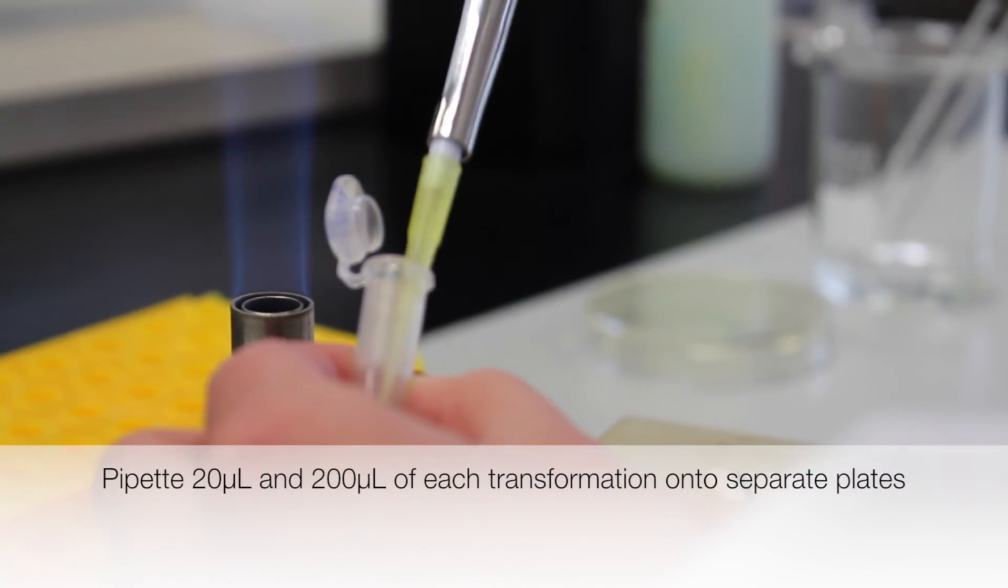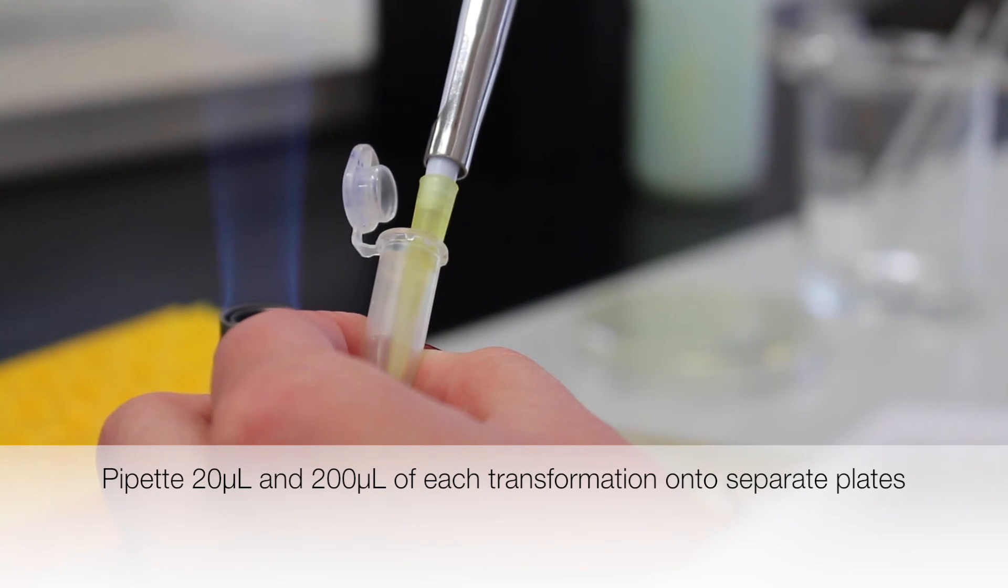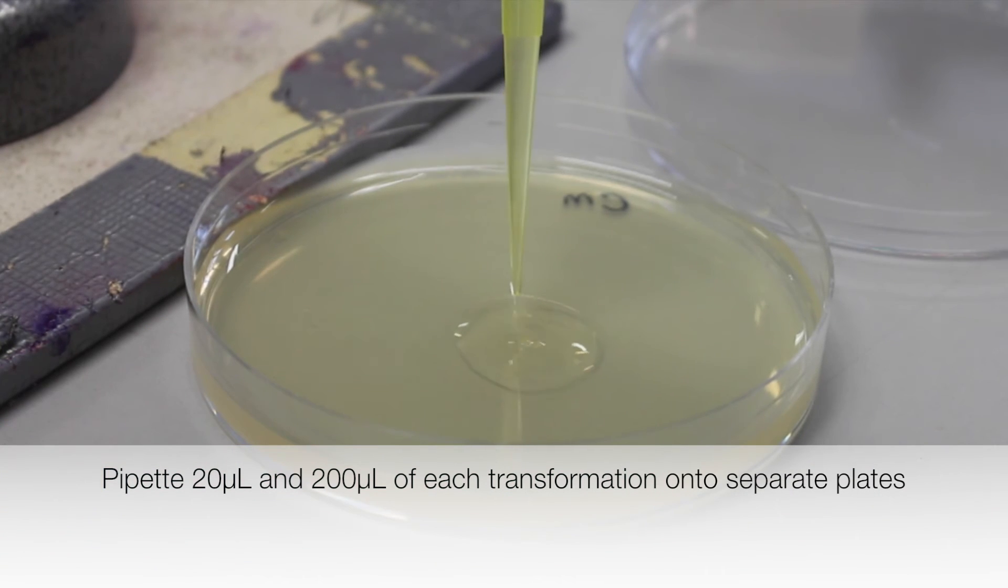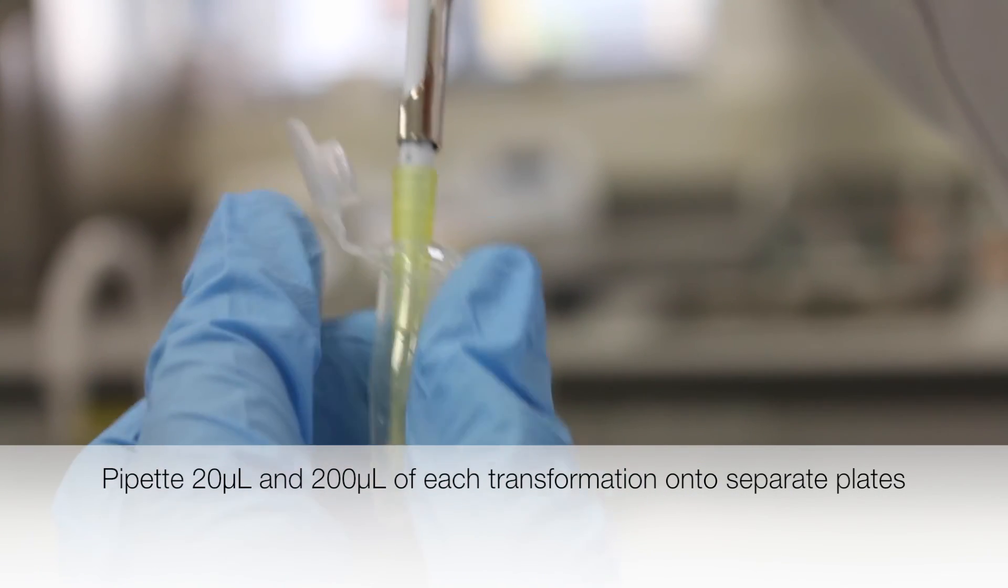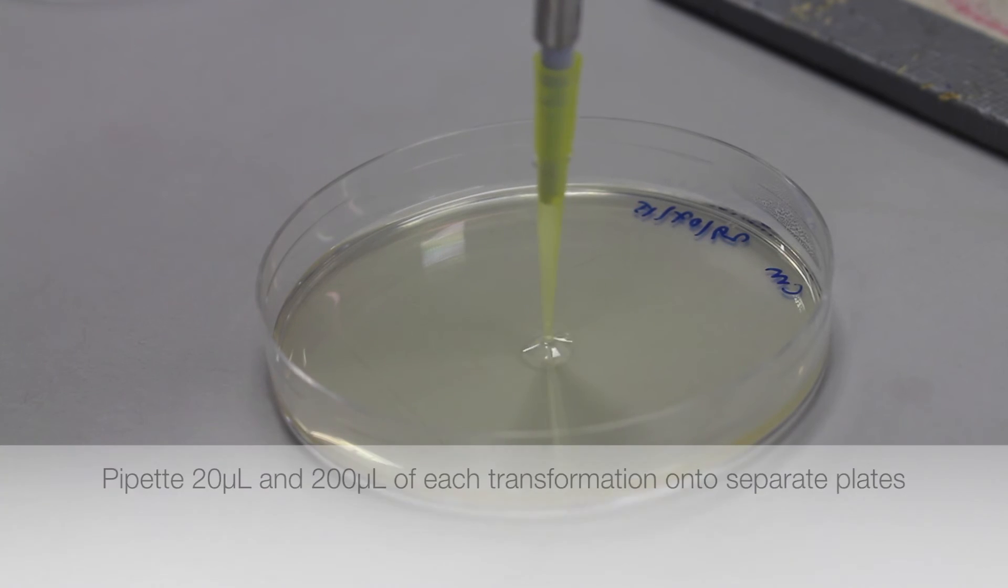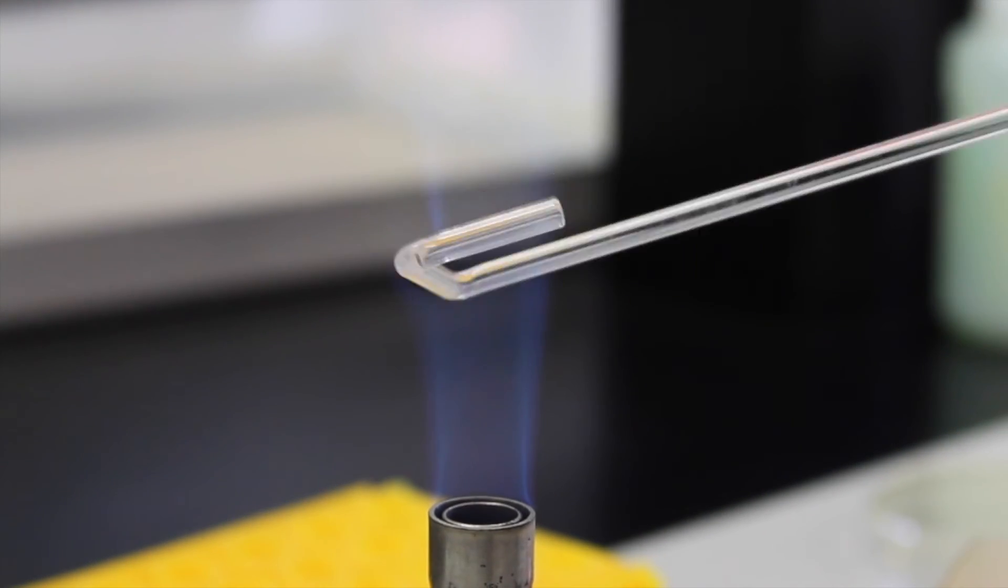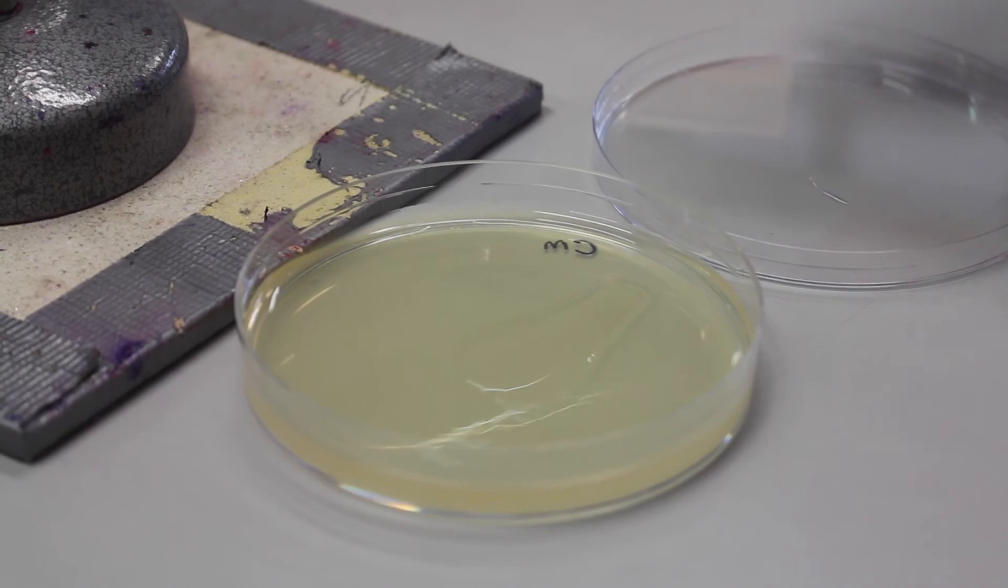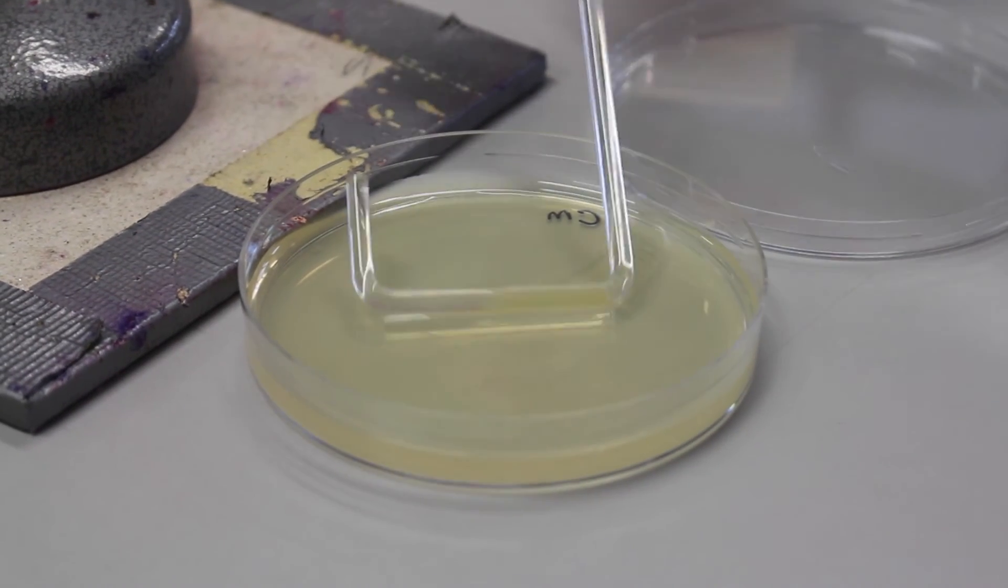Under aseptic conditions, pipette 20 microliters and 200 microliters of the transformation onto appropriately labeled plates. The spreader is passed through the Bunsen burner flame and allowed to cool before being used to spread the cells on the agar plate.